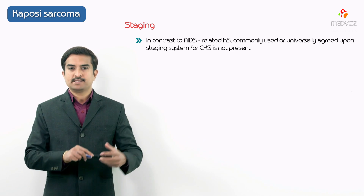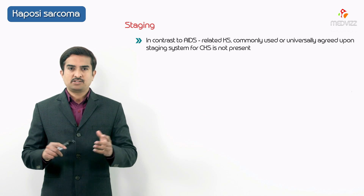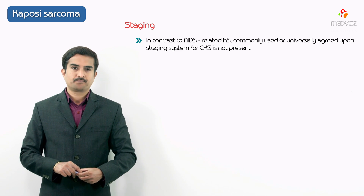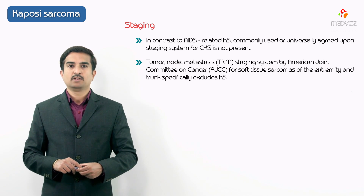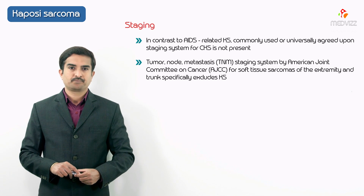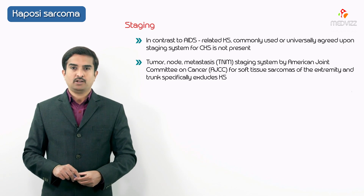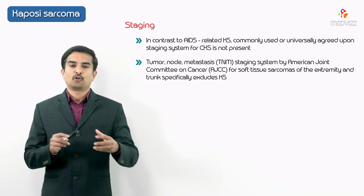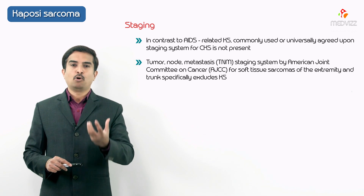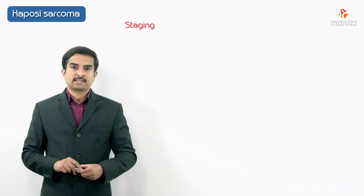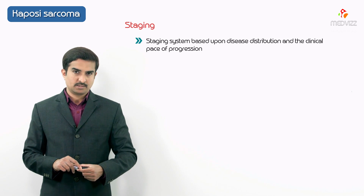In contrast to AIDS-related Kaposi sarcoma, there is no commonly used or universally agreed upon staging system for classic Kaposi sarcoma. The TNM staging system defined by AJCC for soft tissue sarcomas of the extremity and trunk specifically excludes Kaposi sarcoma. Given the variable natural history, one group of investigators used approximately 300 to 400 cases to derive a proposed staging system based on disease distribution and clinical pace of progression.